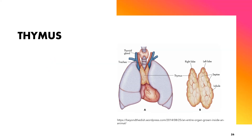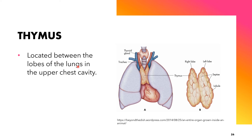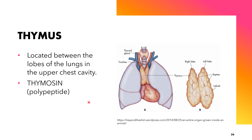The thymus is located between the lobes of the lungs in the upper chest cavity. In terms of its endocrine function, it produces the hormone thymosin, which is considered to be a polypeptide hormone.